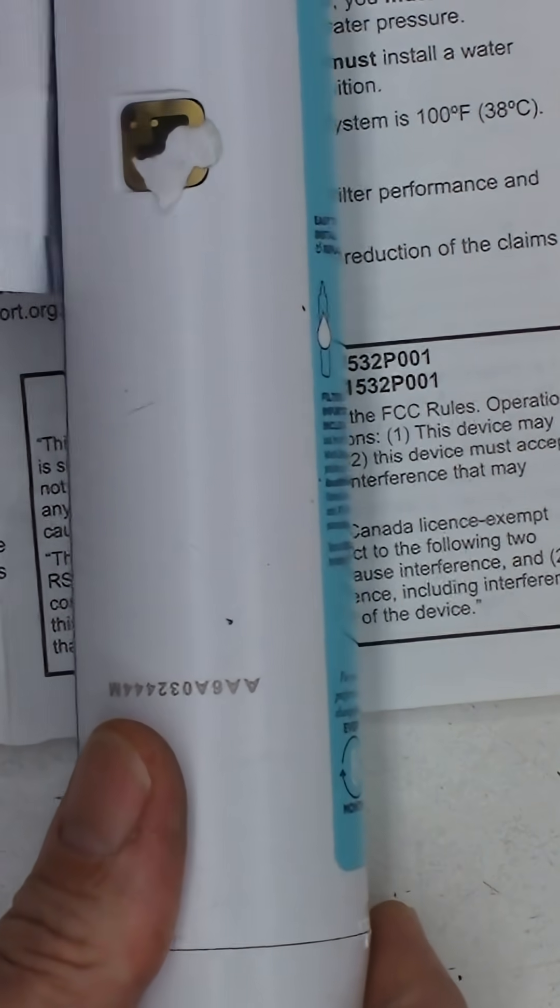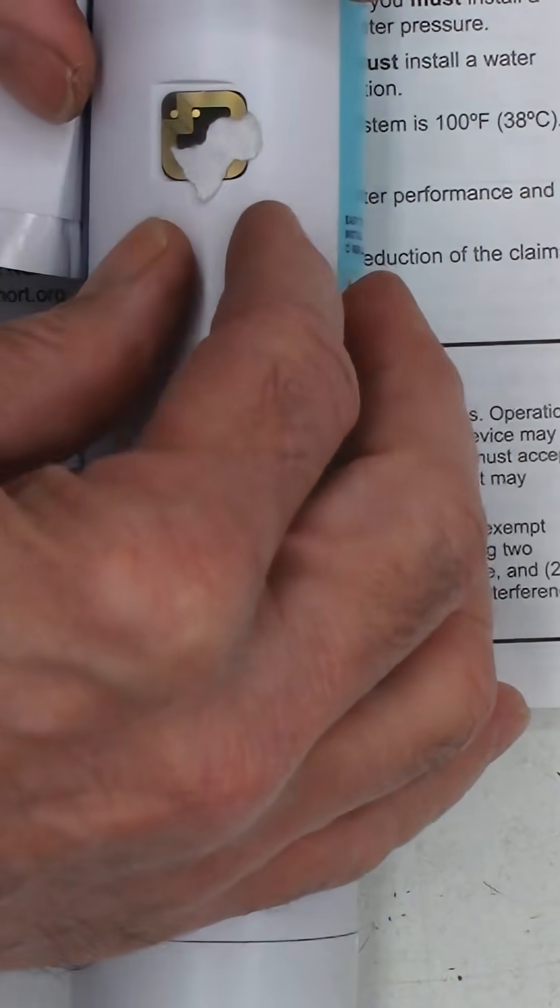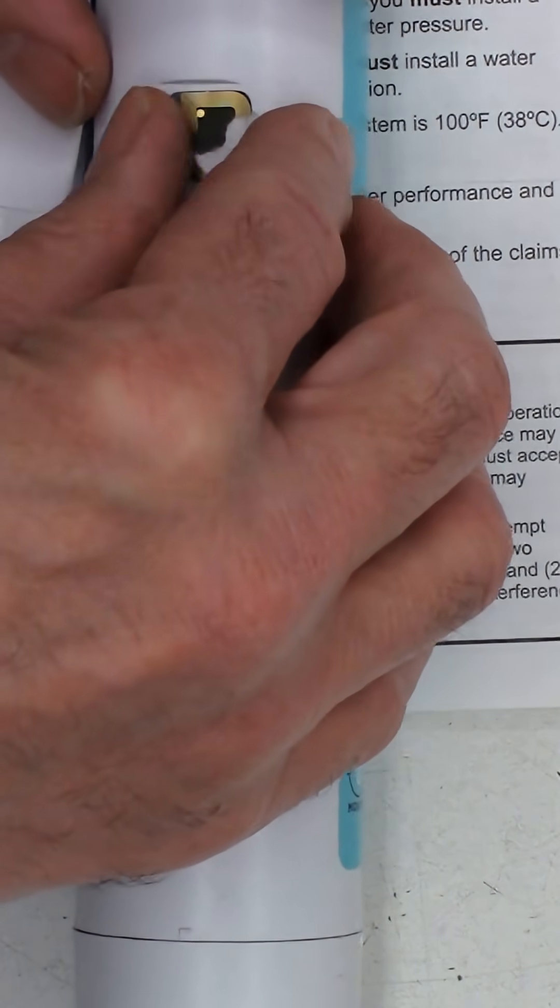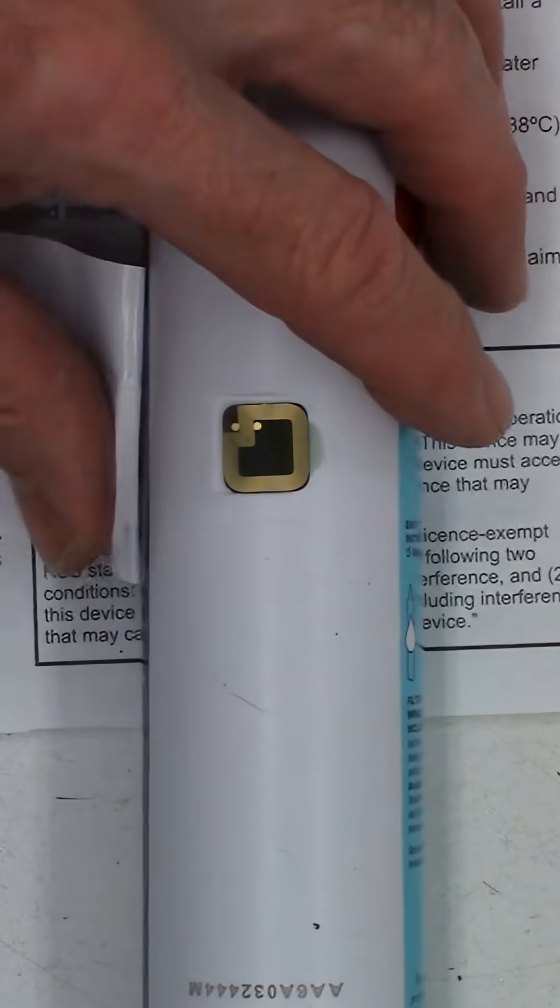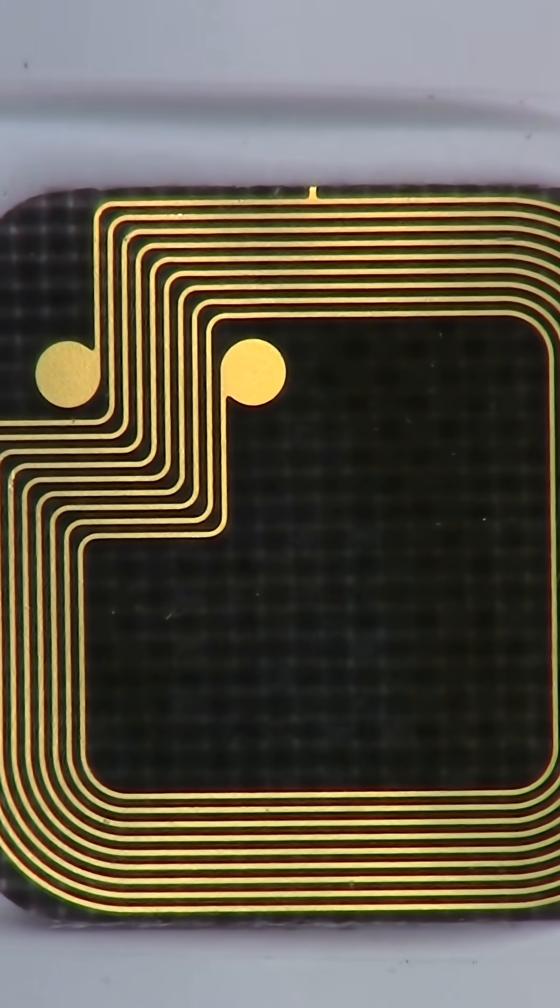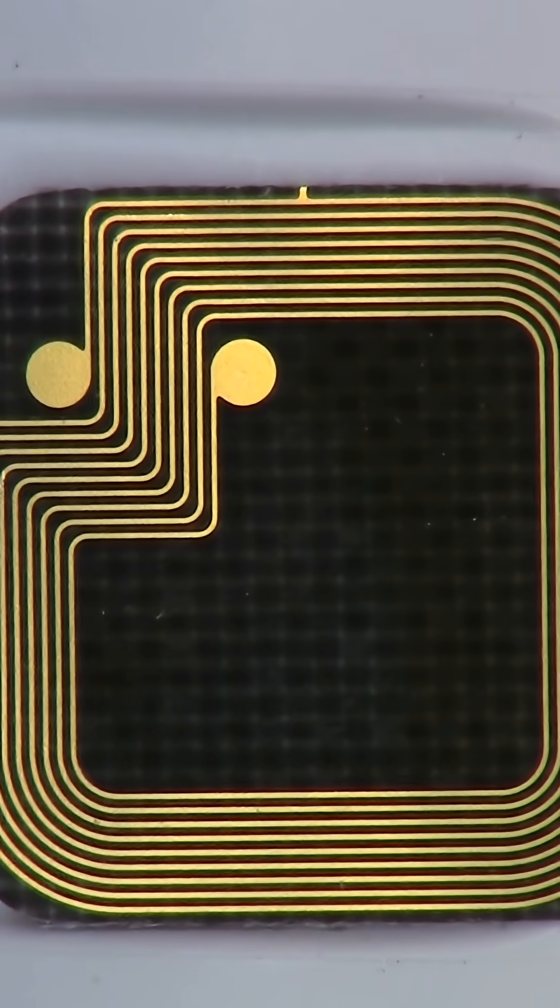There it is. If I can get this off of it. Look at that. It's an RFID module. Let me zoom in on it. Well, that's pretty definitive right there. It's an RFID module.